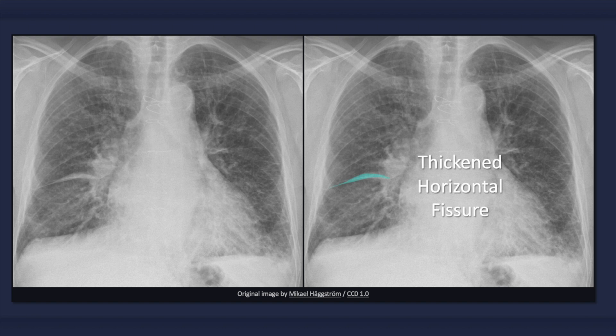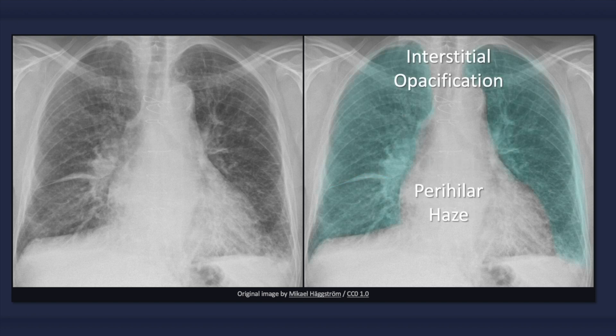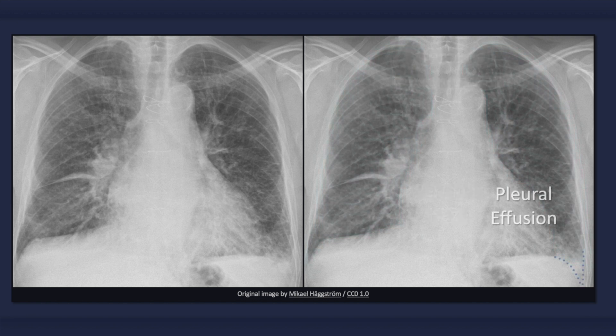Also evident in this image is a thickened minor, or horizontal, fissure. This finding is easier to detect on a lateral radiograph, where both the oblique and horizontal fissures may be visible. Collectively, interstitial edema results in widespread blurring of lung markings, giving a hazy appearance of the lung fields and hila bilaterally. Note that there is a decrease in definition of the left costophrenic angle, a finding consistent with a pleural effusion.